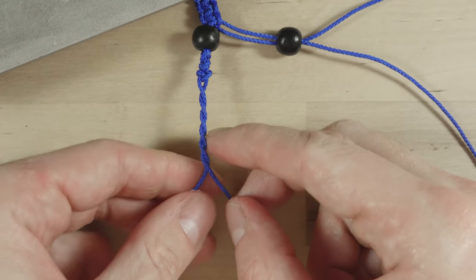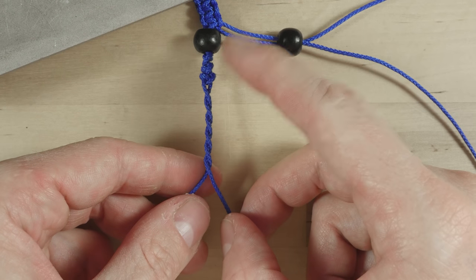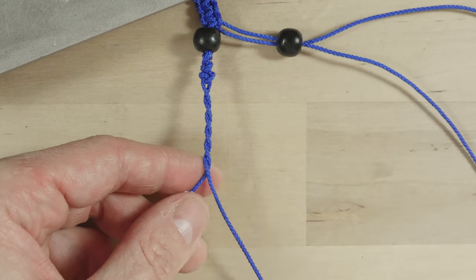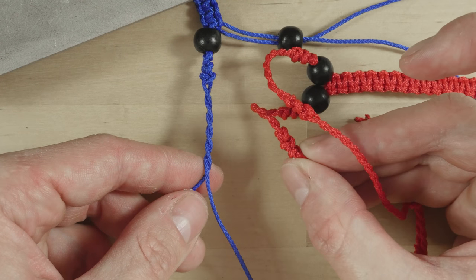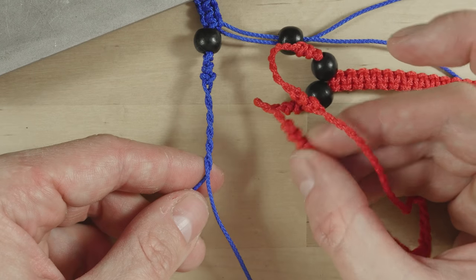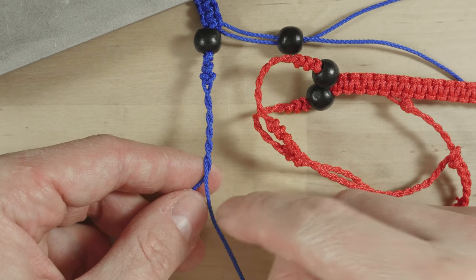Now at this point I'm going to add a couple of more snake knots. This is only for a decorative effect, you can skip these and simply continue twisting.